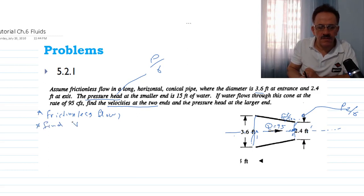We want to find velocity v1 at point one and velocity v2 at the second end point.